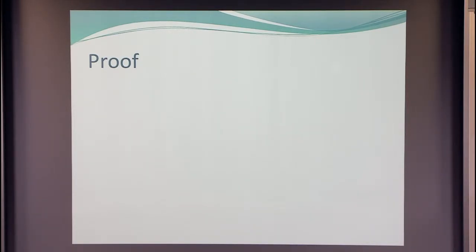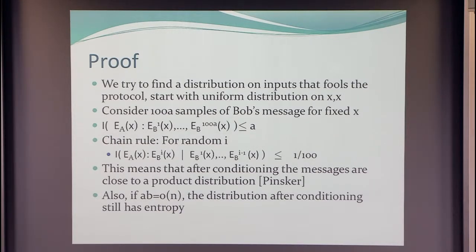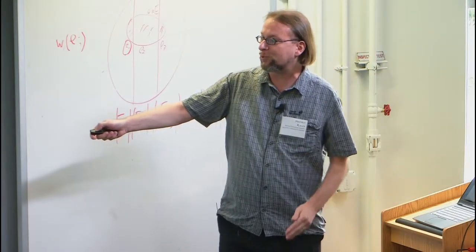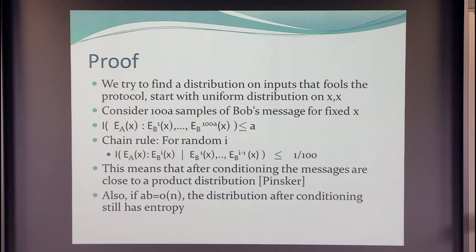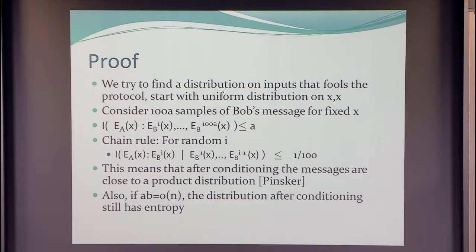To clarify: we start with the uniform distribution on pairs (x, x). We look at the distribution induced after conditioning — you can view this as an expectation over the different values of the messages, and you fix them. On average, it will have 1/100 information. So you take one value of those messages and fix them, putting a condition on the distribution. This new distribution loses some entropy, but the entropy it loses is at most the number of bits you fix, which is less than N.